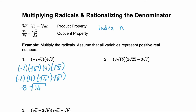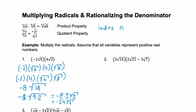Now we're not finished. The square root of 18 can be simplified because the square root of 18 is the same as 9 times 2, and we can take the square root of 9. So we get negative 8 times 3 square root of 2. And again we multiply those coefficients and we have negative 24 square root of 2.